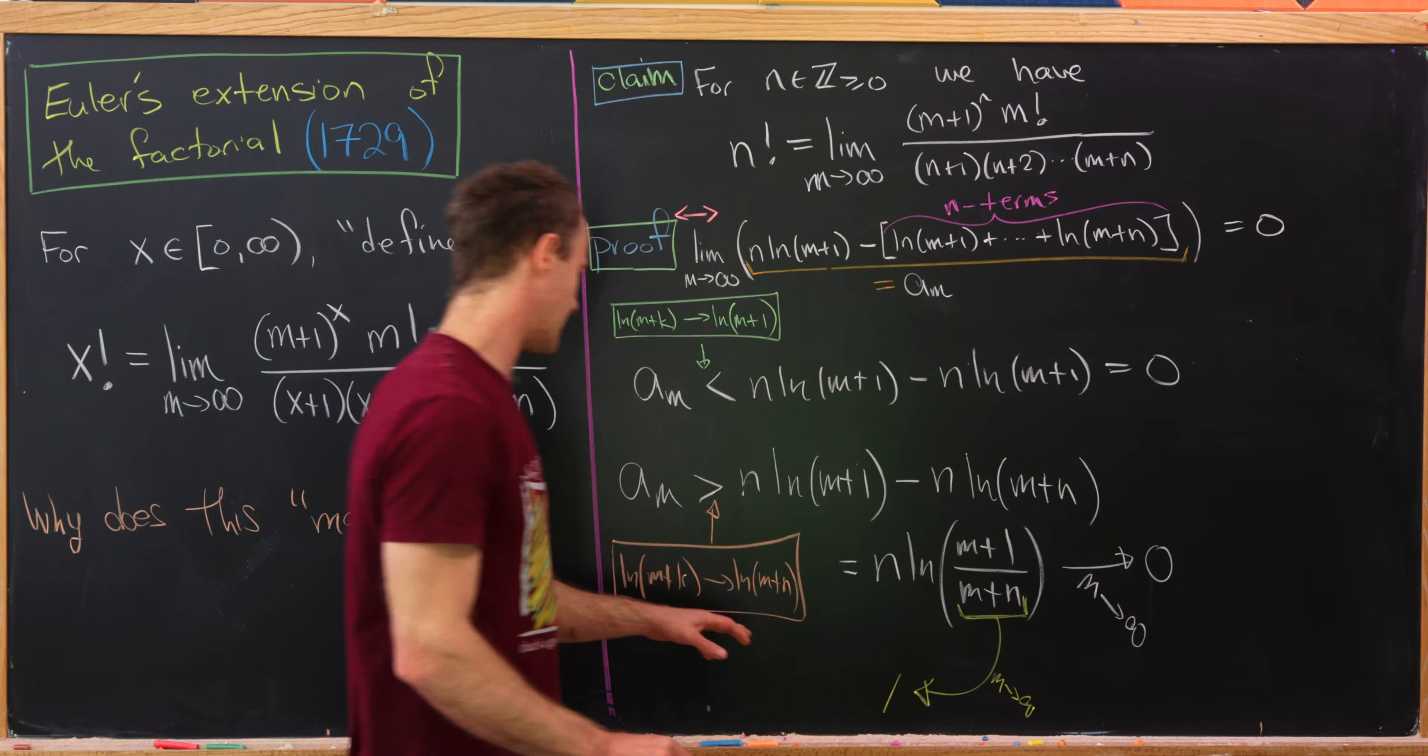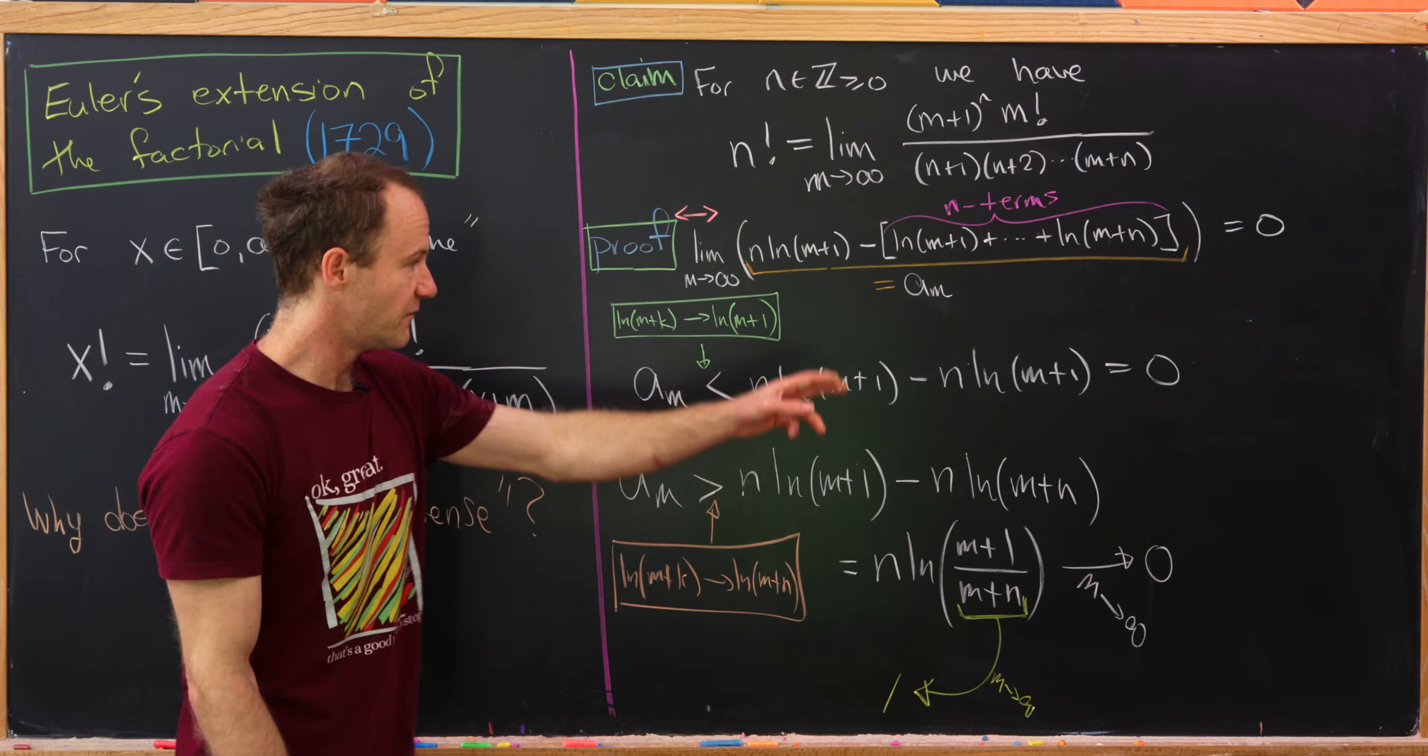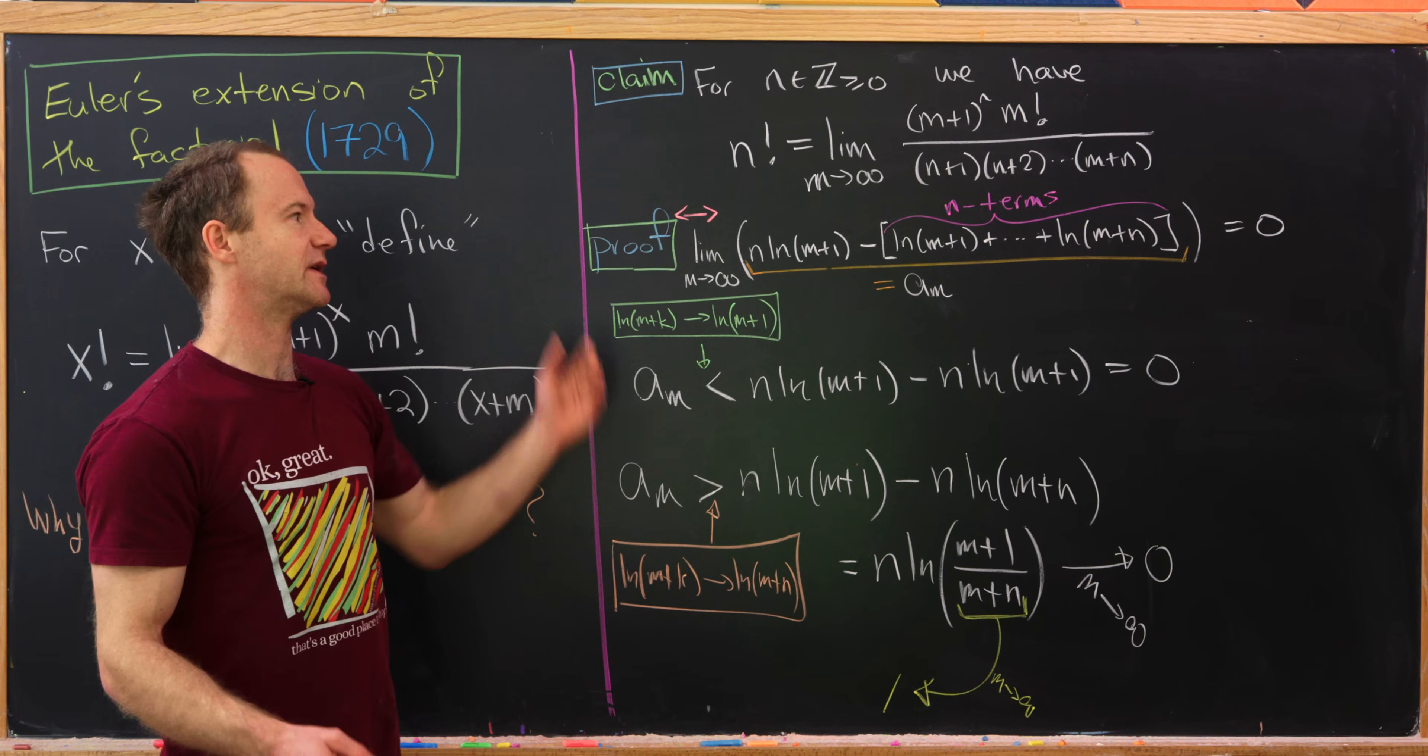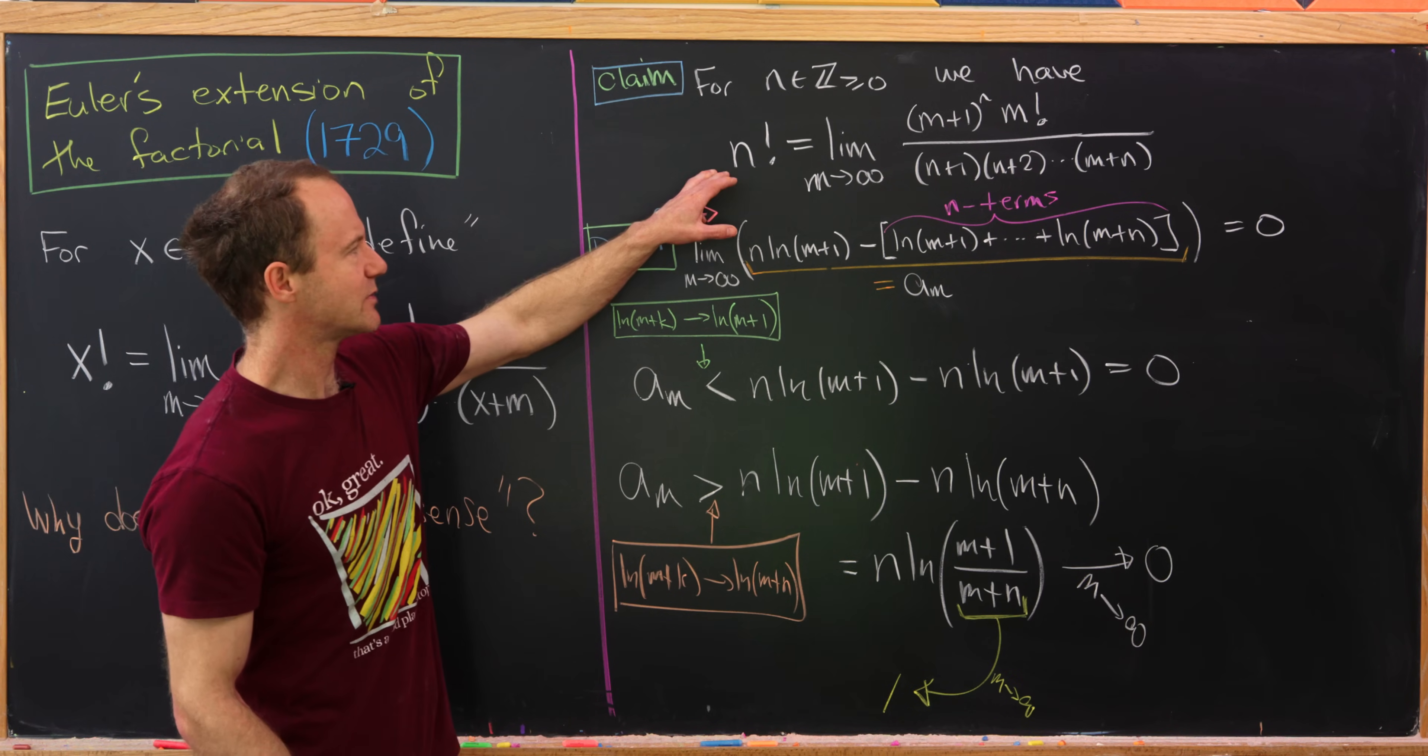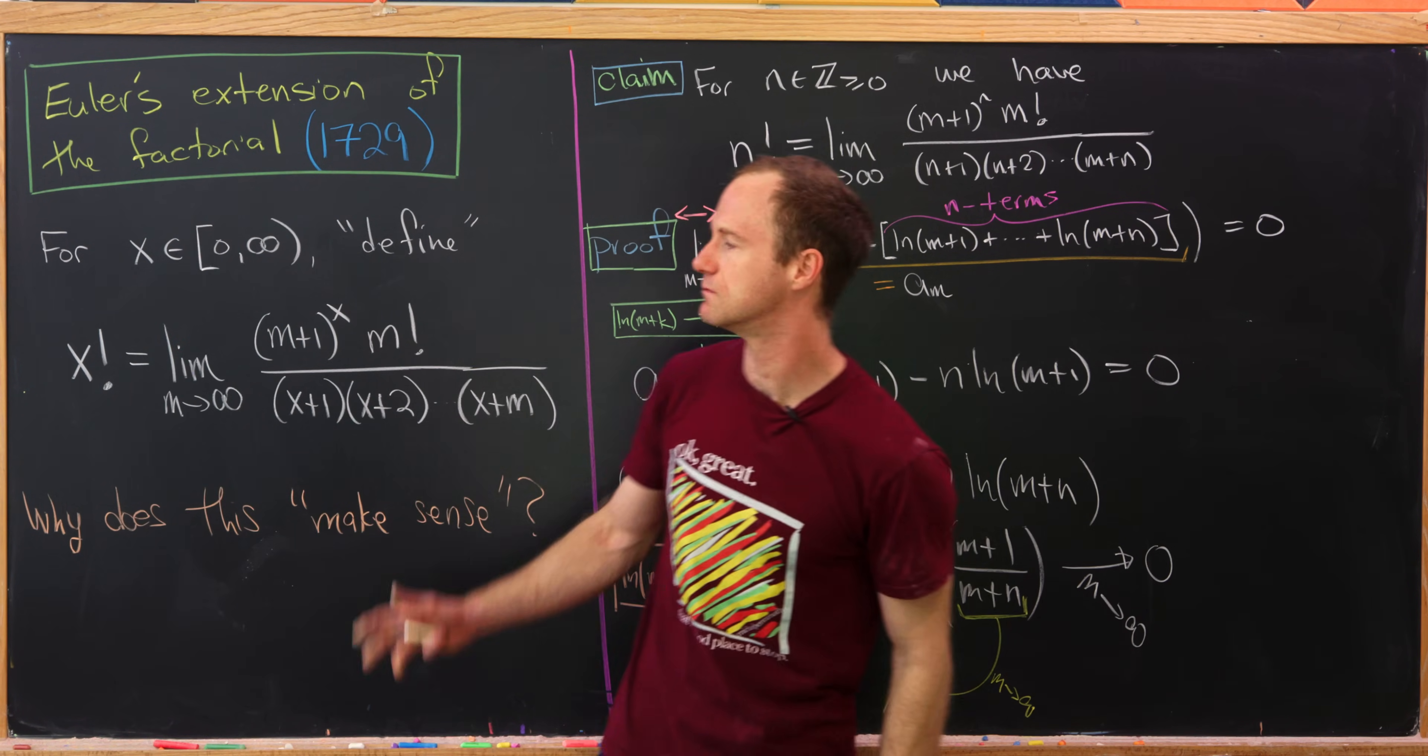So what do we have? Well what we've done is we've bound every term of this sequence above by zero and below by something whose limit is zero. So that means by the squeeze theorem its limit is also zero. Okay, so that establishes that the factorial, the normal factorial, can be expressed as this limit and gives us motivation